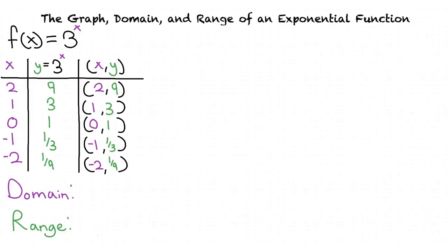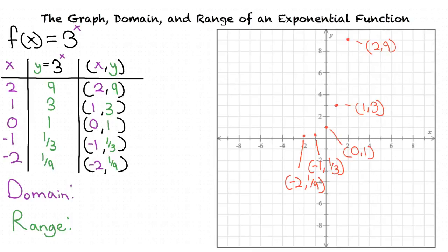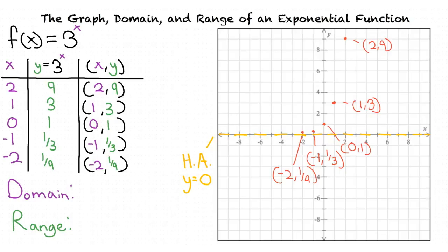Now that we have our table, we plot our points on the graph. Notice that when the values of x become smaller and smaller, the values of y get closer to 0. While the y values get close to 0, they will not reach 0. This means that we have a horizontal asymptote at y equals 0.